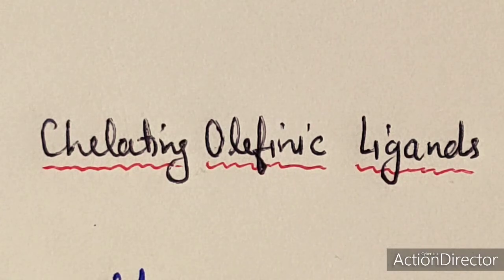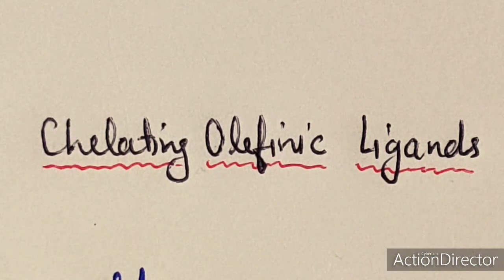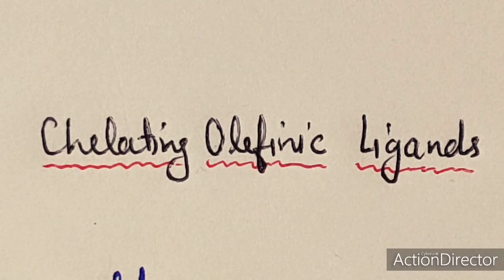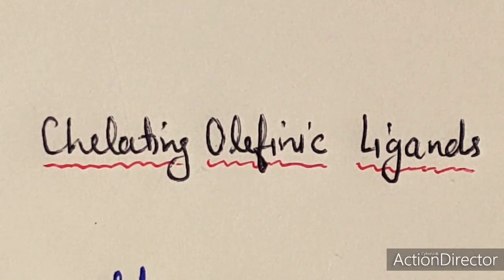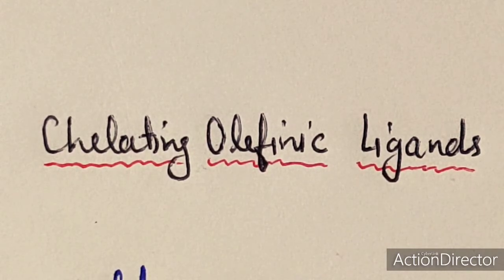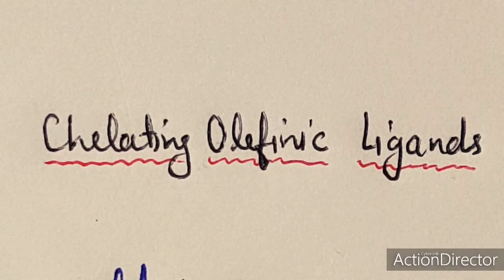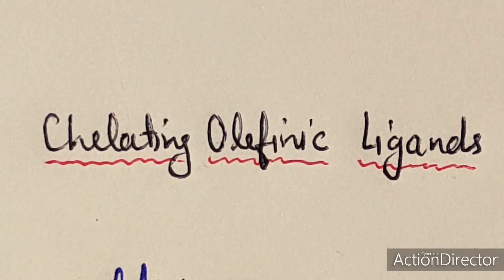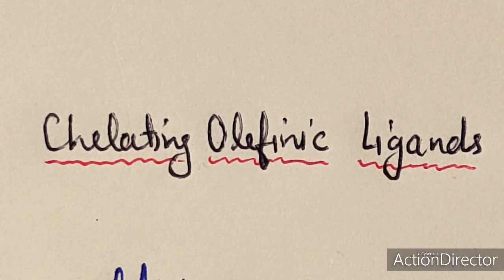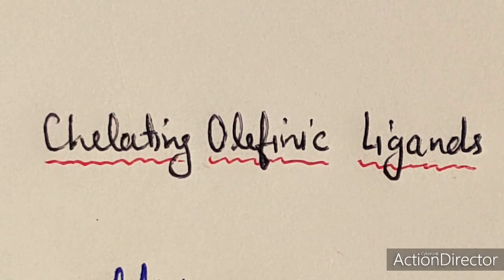Today we will discuss chelating olefinic ligands and their different properties. We have already discussed olefinic ligands and the type of bonding present. In chelating olefinic ligands, the same kind of bonding takes place when olefins are attached via the olefinic double bond.